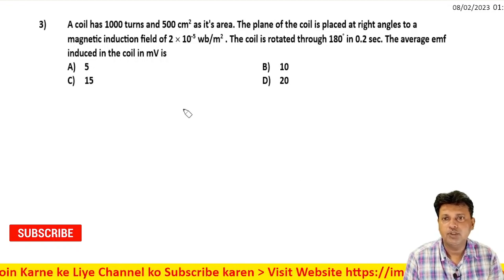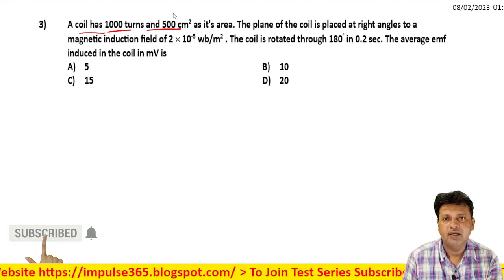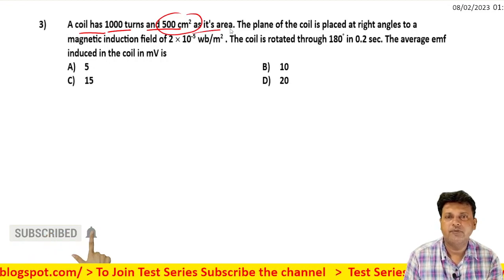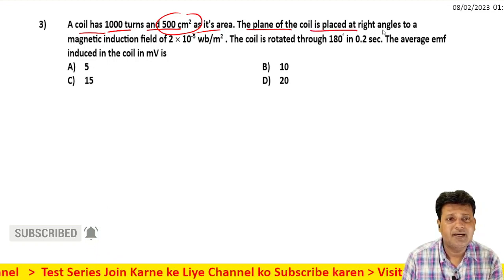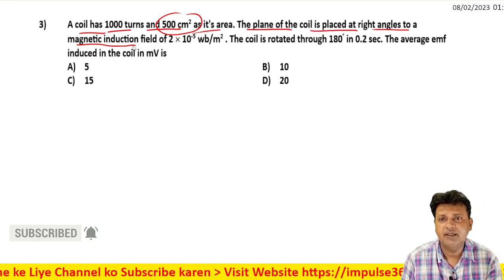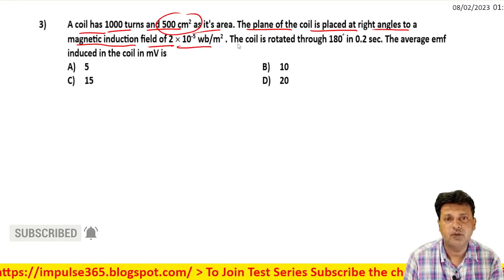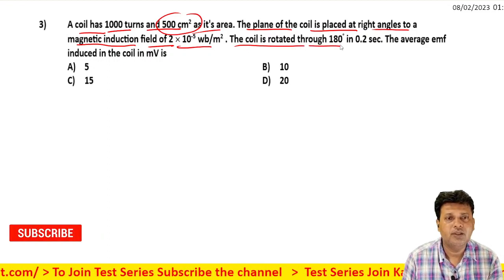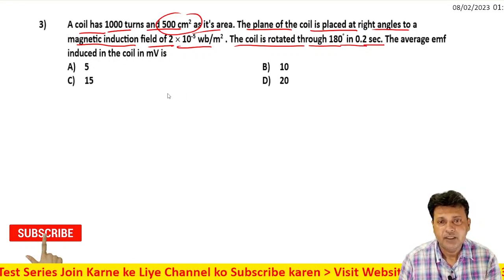The next question: A coil has 1000 turns and 500 cm² area. The plane of the coil is placed at right angles to a magnetic induction field of 2×10⁻⁵ weber per meter square. The coil is rotated through 180° in 0.2 seconds. Find the average EMF.